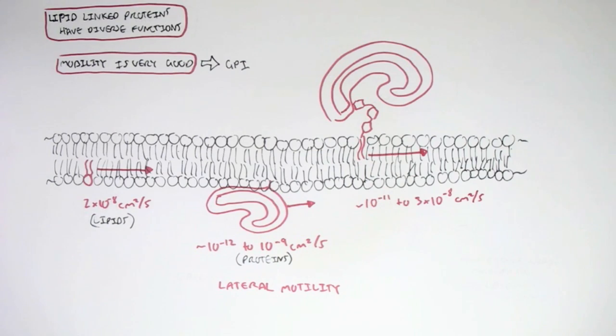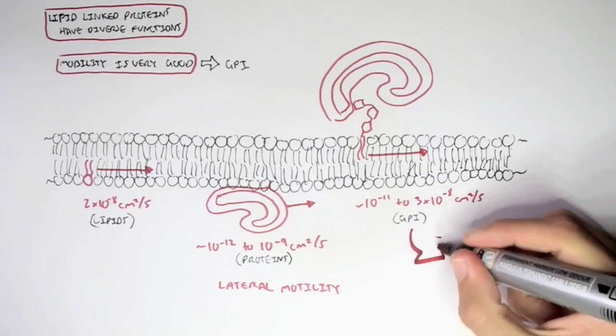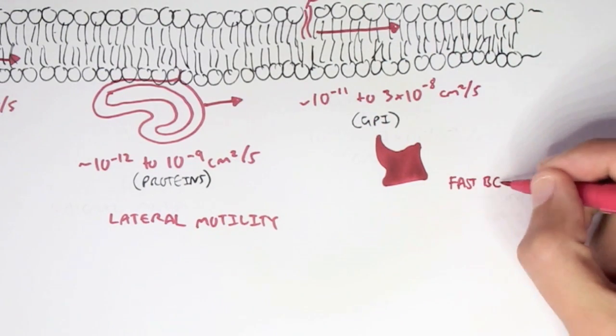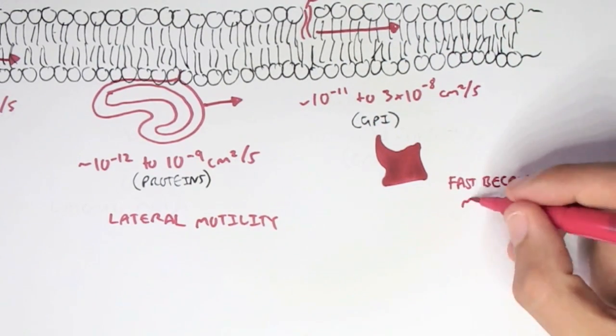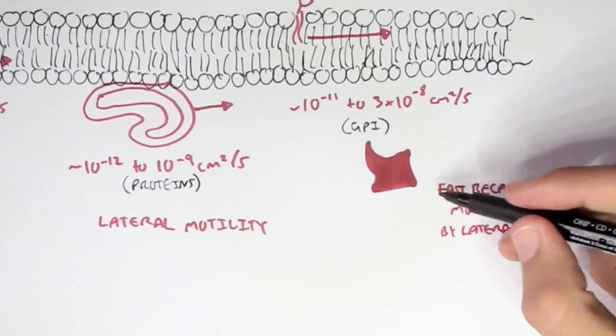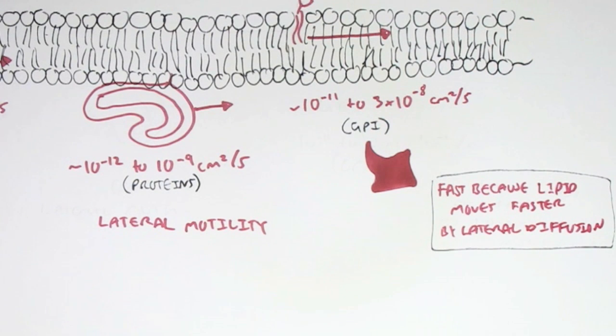Now, if we look at GPI protein, glycosylphosphatidylinositol protein, it moves at about 10 to the negative 11 to 3 times 10 to the negative 8 centimeters squared per second. And so these figures, this GPI protein, moves at just a bit slower than the lipid, but a lot faster than normal proteins.